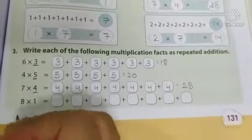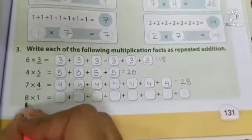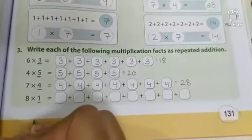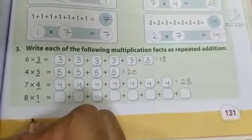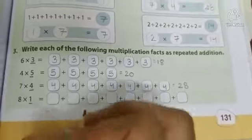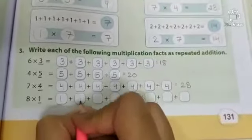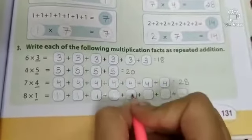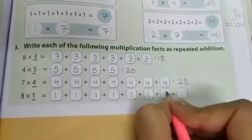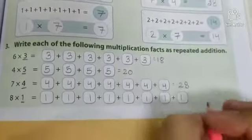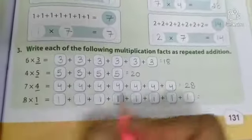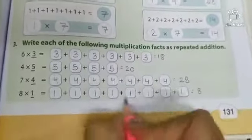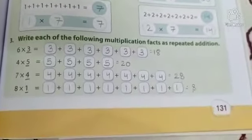Now class, last part. 8 into 1, means 8 times 1. So we have to write 1 how many times? 8 times. So 1, 2, 3, 4, 5, 6, 7 and 8. So 8 ones are 8, or 1 eights are 8. Okay?